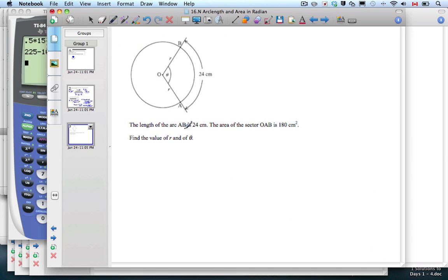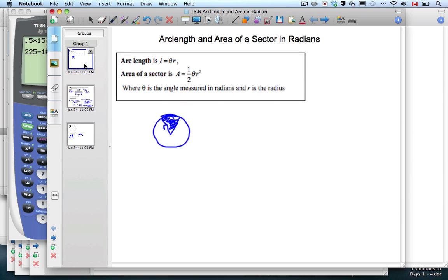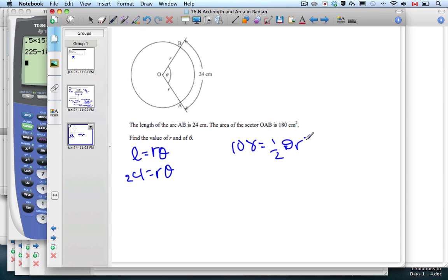One more to go. The length of arc AB is 24 and the area of the sector is 180 centimeters squared. Find R and theta. We'll have two equations of two unknowns. L equals R theta, which is 24. And the other one, 180 equals one half theta R squared. You can just set them both equal to theta. So 24 over R is theta, and 216 over R squared equals theta.